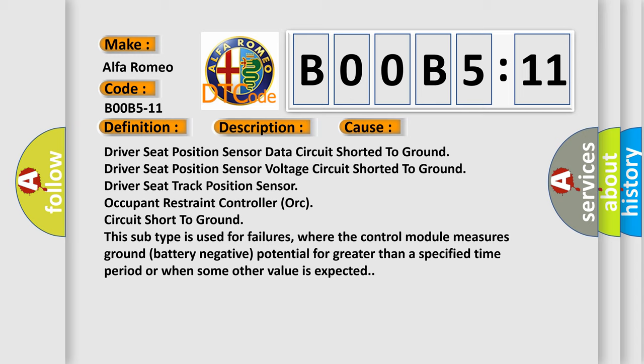This subtype is used for failures where the control module measures ground (battery negative) potential for greater than a specified time period or when some other value is expected.